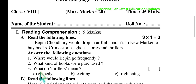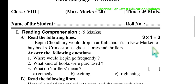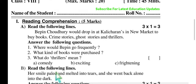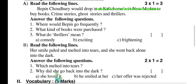What do 'thrillers' mean? Vipin would drop in at College Street errands in New Market frequently to buy books. The kinds of books purchased were crime stories, ghost stories, and thrillers. 'Thrillers' means exciting or frightening stories. Please be precise and concise and make sure you select the right answer.